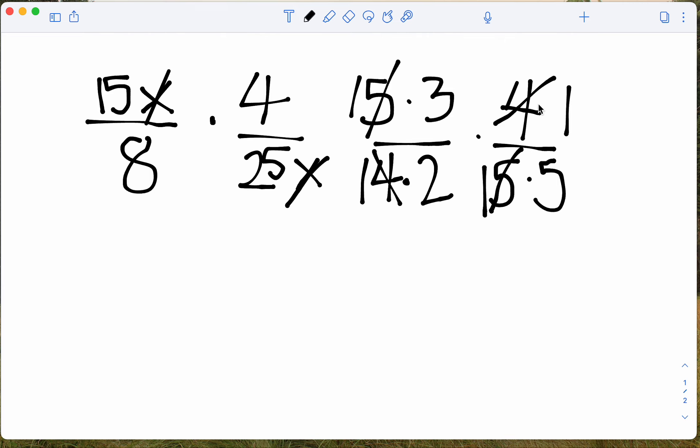So now on top for our numerators we can multiply across. We have 3 times 1 which gives us 3, and in the bottom we have 2 times 5 which gives us 10. And that is our answer, my friends.